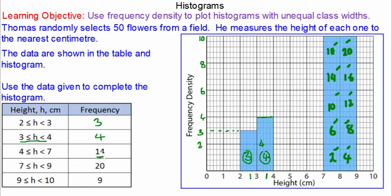Between 4 to 7 we know the base is 3 times the height or frequency density to make the frequency 14. So the frequency density is 14 divided by 3, 4.6 recurring.